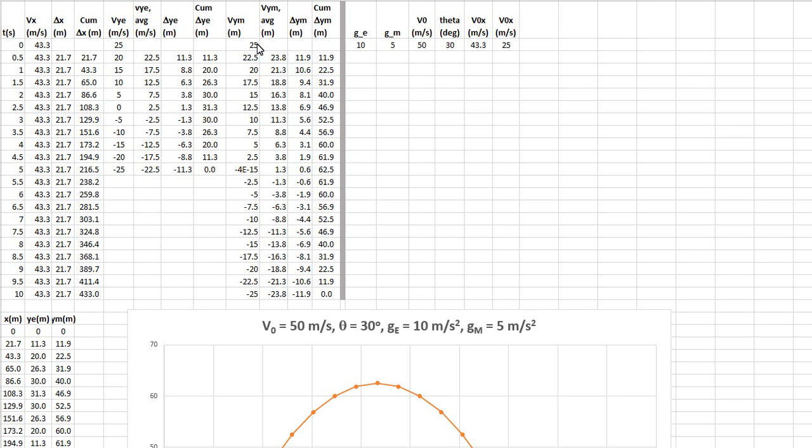Now I do the same thing for the moon. The moon has half the gravitational constant of the earth. So in one second, instead of decreasing by 10, it decreases by 5. And in half a second, it decreases by 2.5. This is the computation for the average velocity for the moon. The delta y for the moon is the average velocity times 0.5. The cumulative delta y then shows you what the position is.